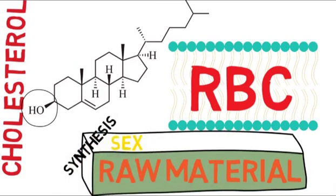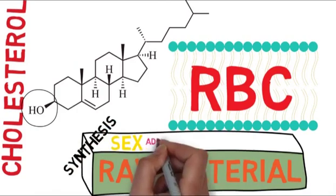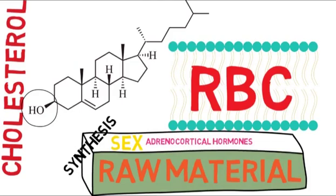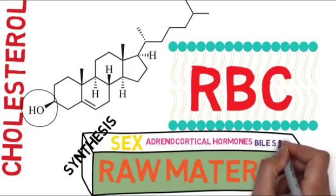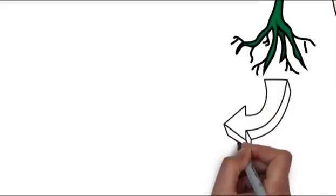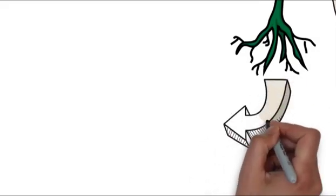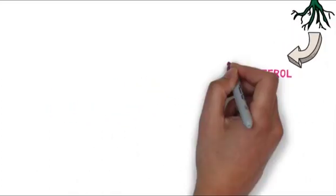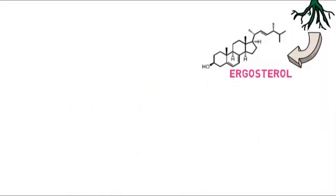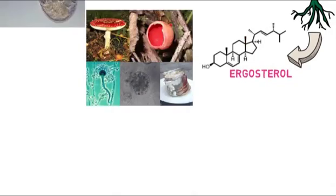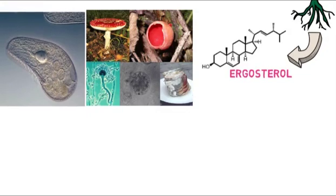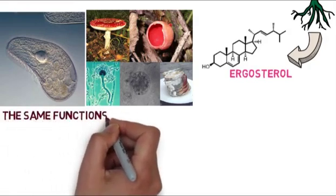Now discuss the phytosterol. An example of plant sterol is ergosterol. This is the chemical composition of ergosterol. They are found in yeast and the membranes of protozoa. They serve the same function that cholesterol serves in animal cells.